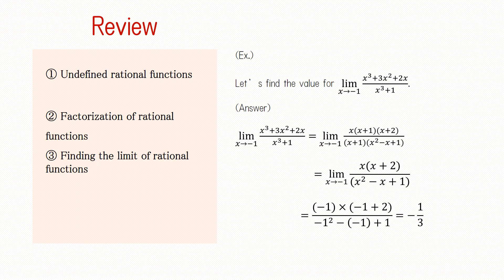Finally, we learned how to find the limit of a rational function. For example, in the practice problem, the rational function (x³ + 3x² + 2x) / (x³ + 1) is not defined when x equals negative 1 and the numerator and denominator are both zero, so we can factor.